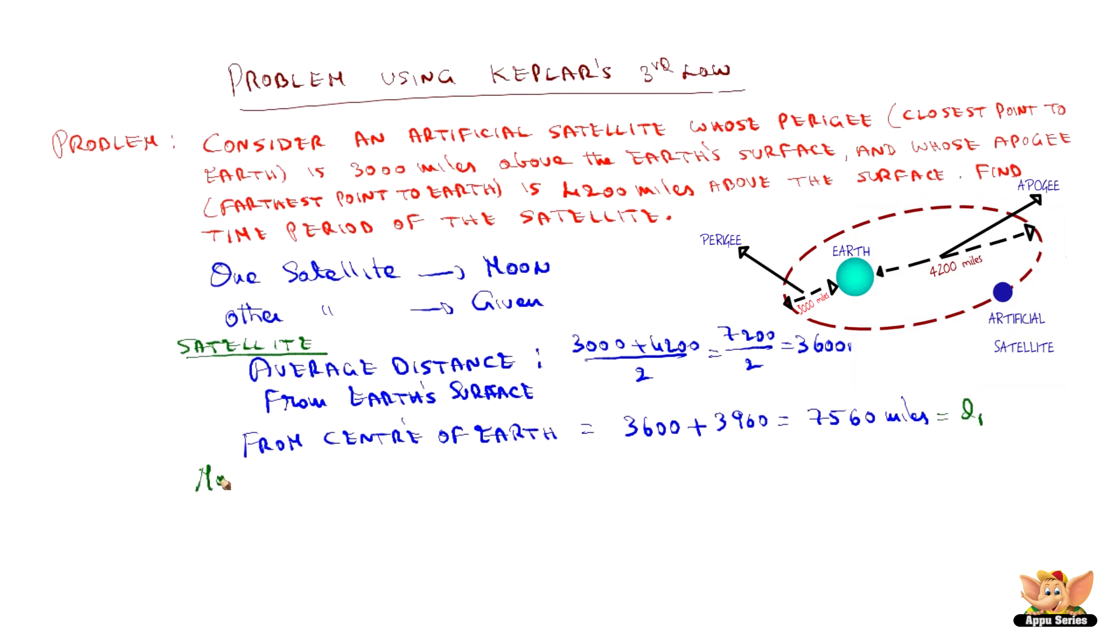Now, we will take the data for the moon. In the moon data, we know what is the moon to center of earth distance, which is a known parameter, 239000 miles. We also know the time period of the moon around the earth, 27.3 days.